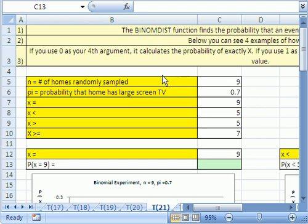In this trick number 21, we're going to talk about the BINOM.DIST function. This is a function that will calculate the probability for a binomial experiment.